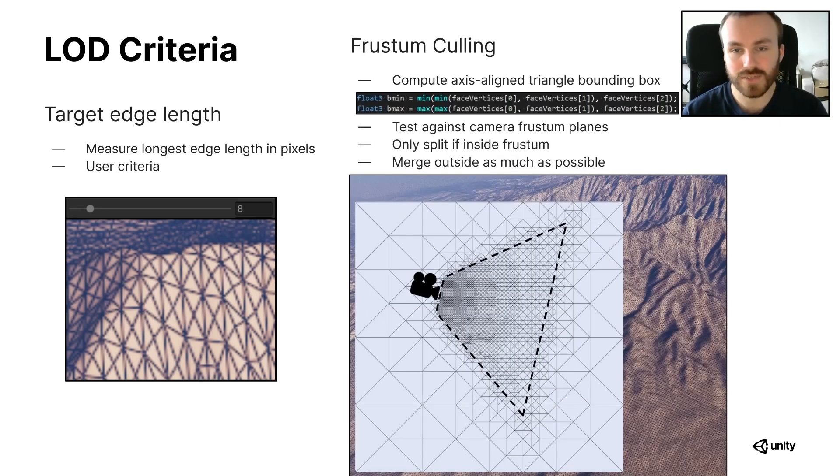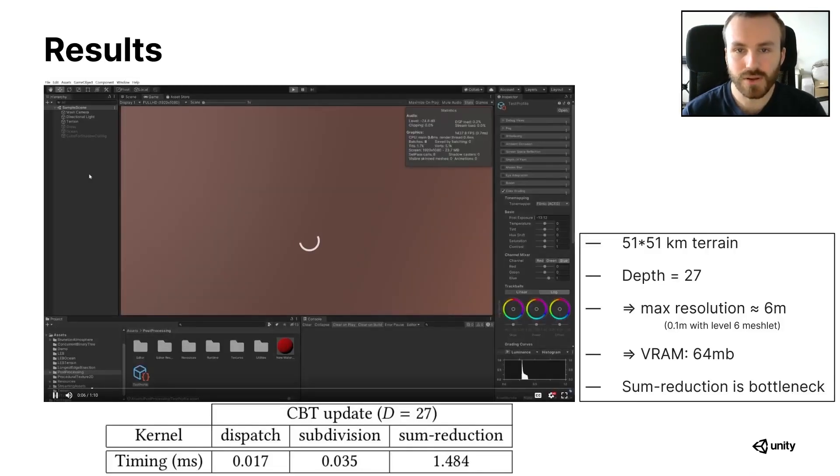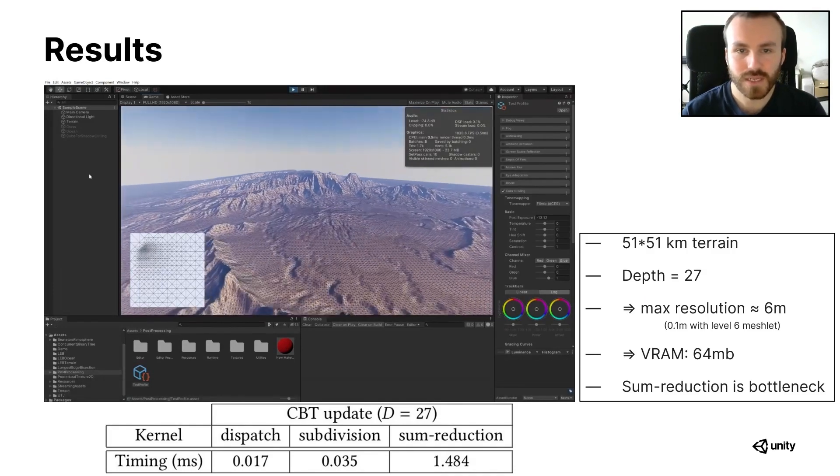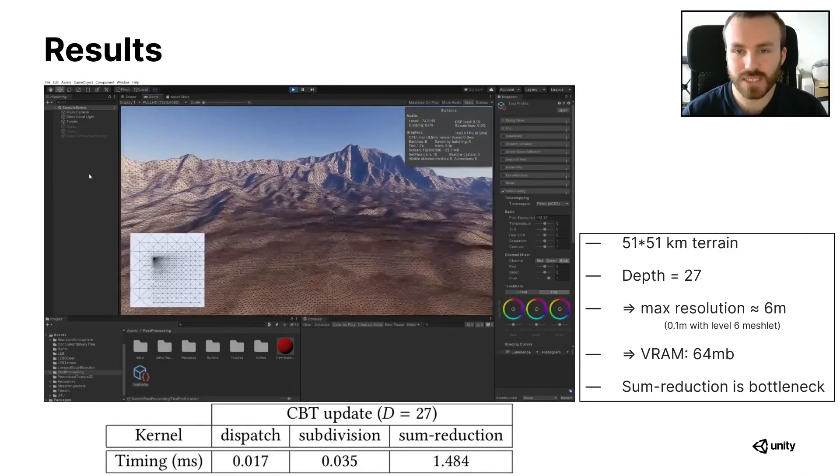And our second level of detail criteria is frustum culling. To avoid drawing many small triangles that are outside of the camera view, we test the axis aligned bounding box of the triangle against the camera's frustum. If they don't intersect, the triangle is not visible and we don't allow it to split.